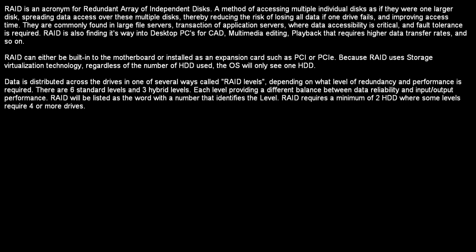Data is distributed across the drives in one of several ways, called RAID levels, depending on what level of redundancy and performance is required. There are six standard levels and three hybrid levels, each providing a different balance between data reliability and input-output performance. RAID will be listed as a word with a number that identifies the level. RAID requires a minimum of two hard disk drives, where some levels require four or more drives.